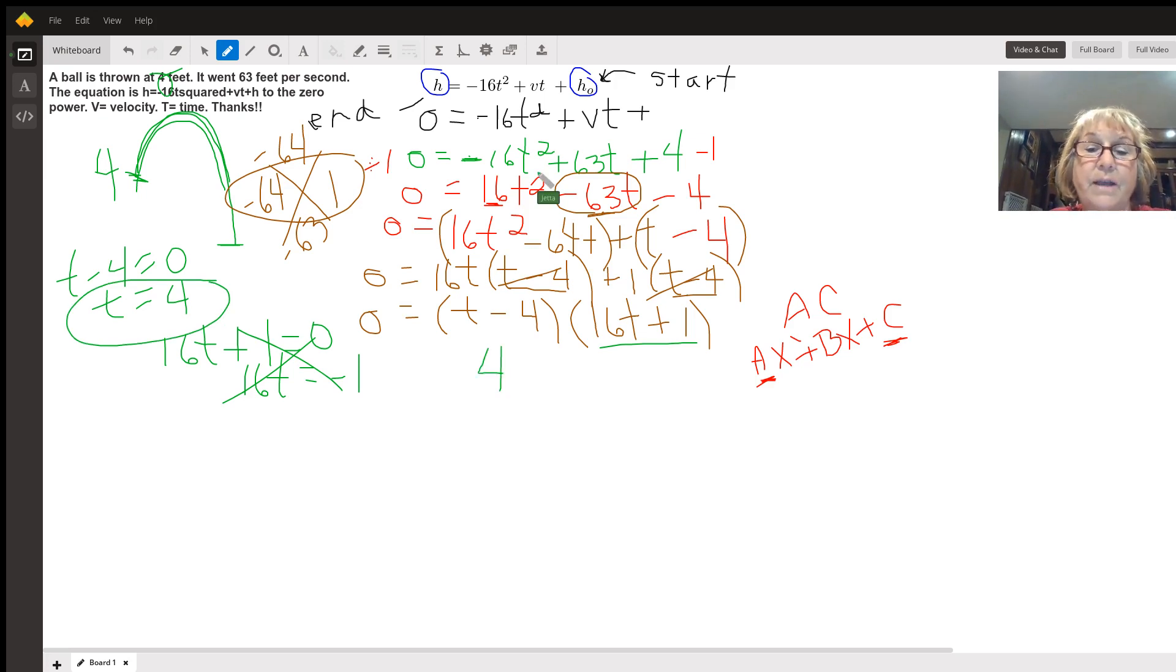So your final answer then is four seconds. So it takes four seconds. And that makes sense. I mean, this person must have really thrown it. Well, 63 feet per second. That's a long, that's a lot of feet. That's a big throw. So the ball stayed in the air for four seconds before it hit the ground. Okay. So hope that helped. Again, this is Jenna McGinnis. I'd love to help you again. Ask for me at Wyzant and they'll connect us. Good night.